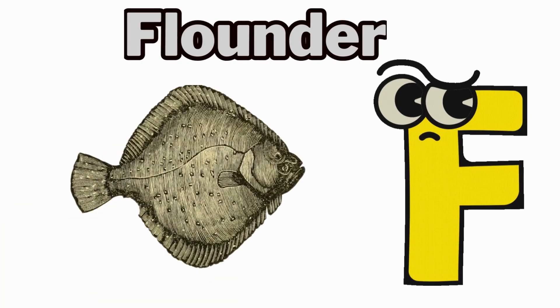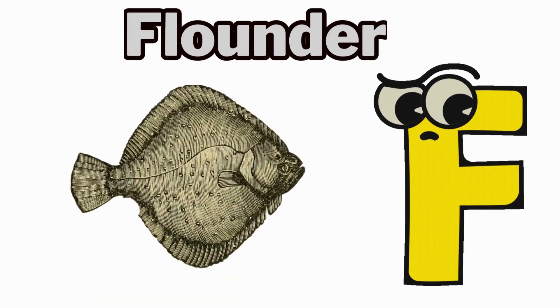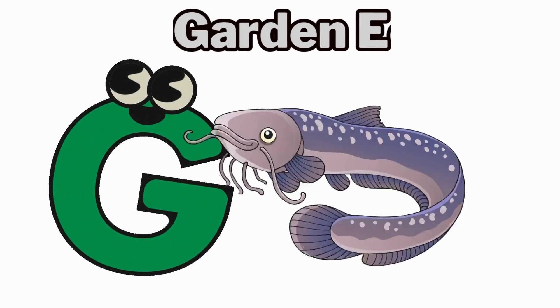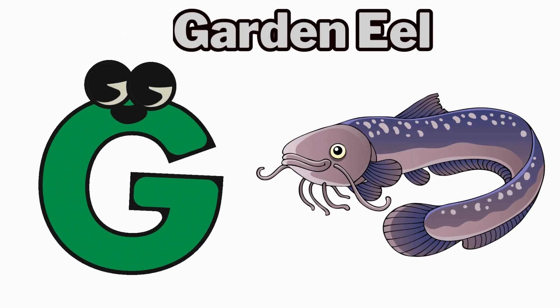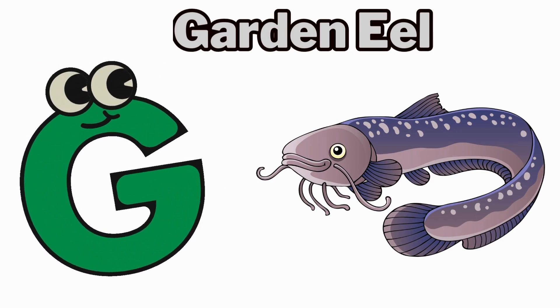F is for flounder, fuh, fuh, flounder. G is for garden eel, guh, guh, garden eel.